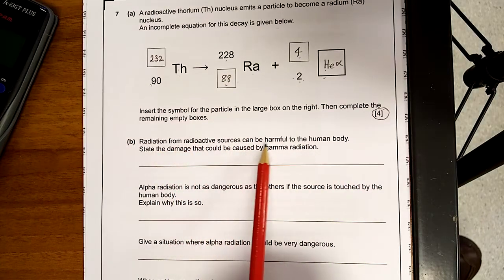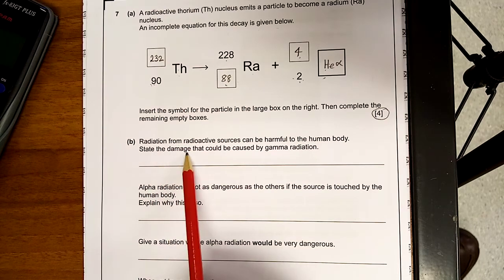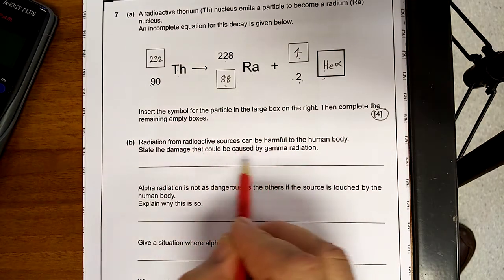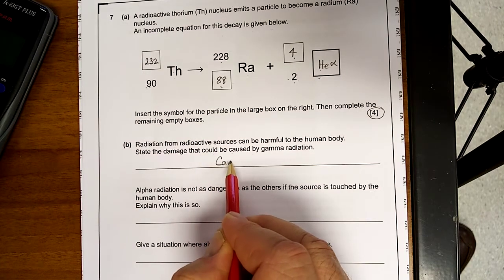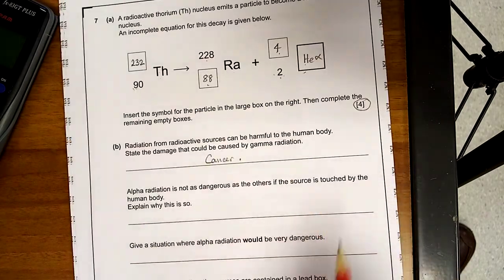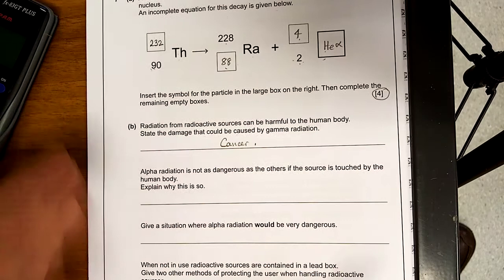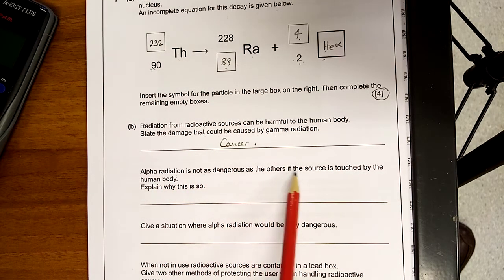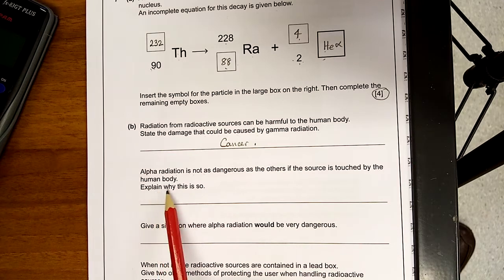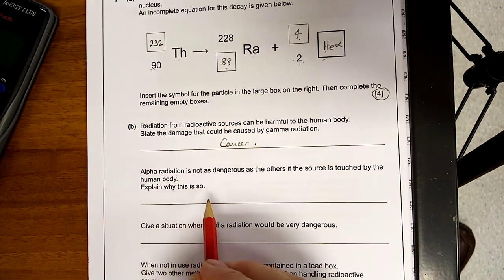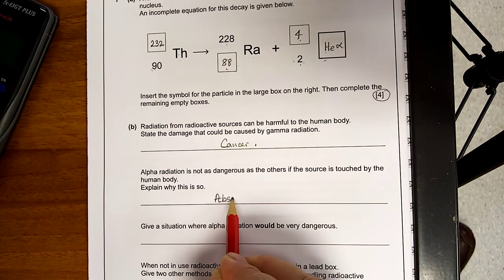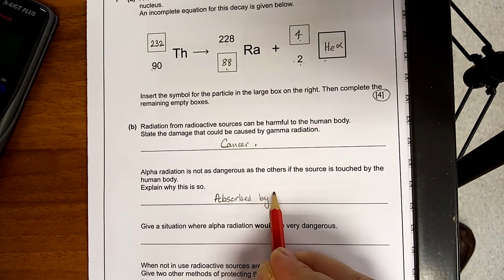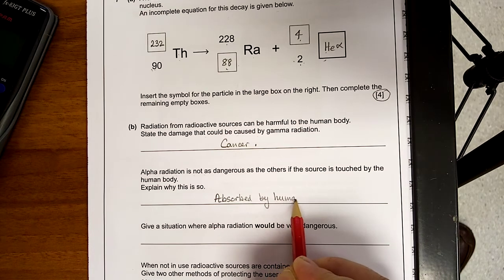Radiation from radioactive sources can be harmful to the human body. State a damage that could be caused by gamma radiation. Now, a full sentence, I'm not going to write it. Cancer. So you pick your full sentence out of that. It's been absorbed by human skin, so it doesn't enter the body.